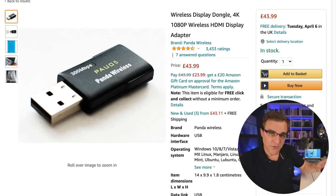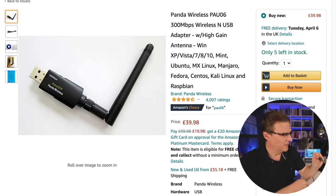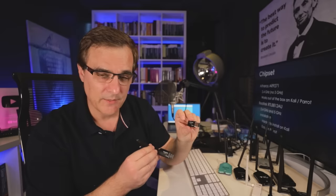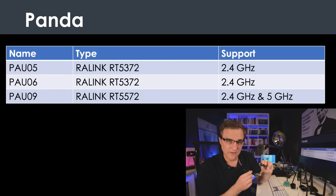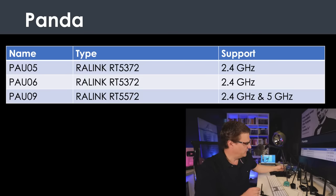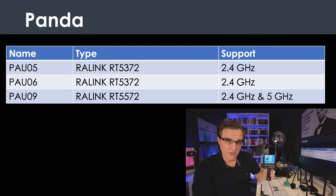Some people prefer to buy a brand name — here I've also got some Panda Wi-Fi adapters. You need to look at the chipset in the Panda adapter. A lot of people like the Panda adapters. Some have a chipset that only supports 2.4 GHz, whereas this other Panda adapter supports both 2.4 GHz and 5 GHz. So it's really important to work out the chipset used.